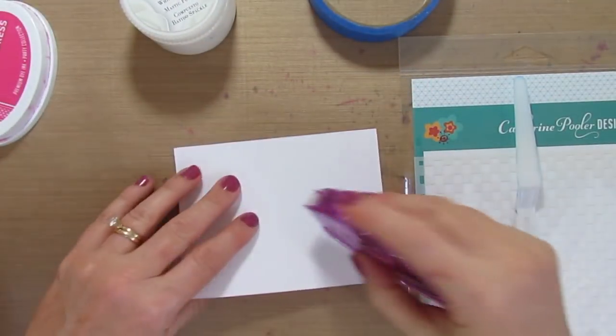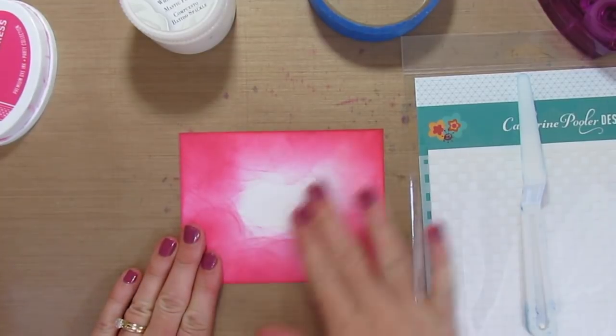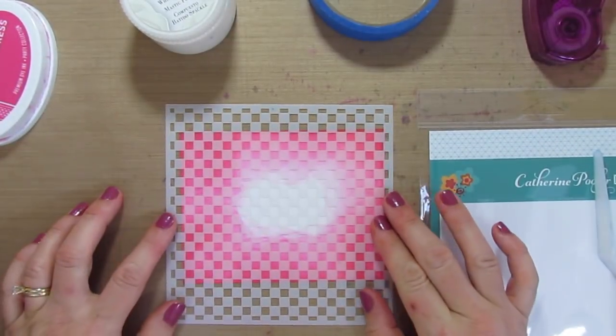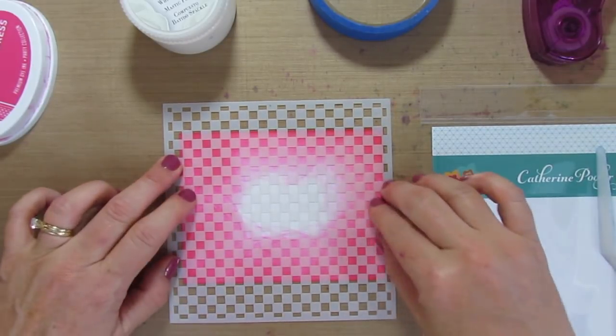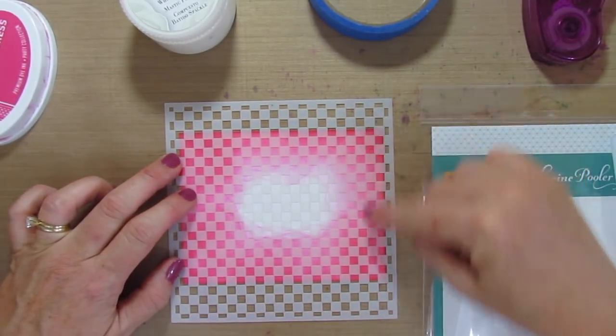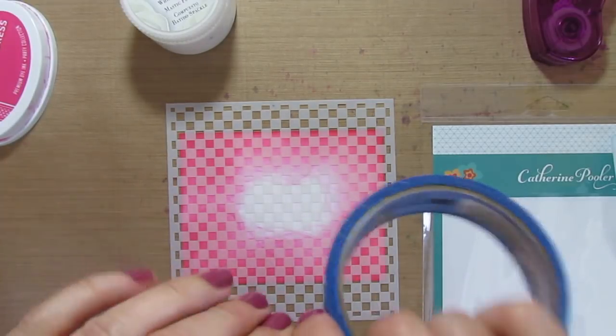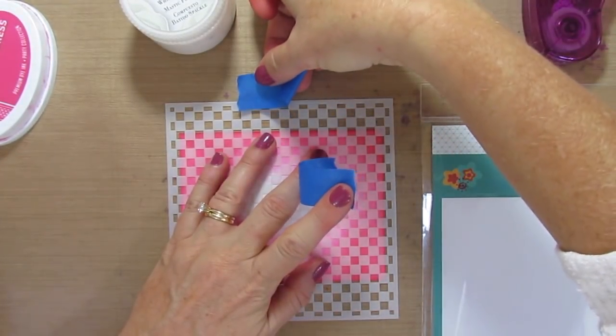I'm going to do some stenciling, so I'm going to add a little adhesive to the back. This will help my layer stay put and not move around on the work surface. I'm going to use the checkerboard stencil, lining this up so that it is even on each side and top to bottom. I have a little painter's tape just to secure the stencil in place.